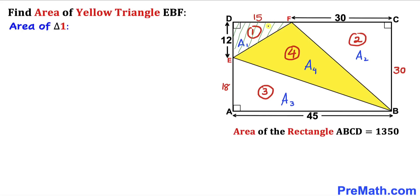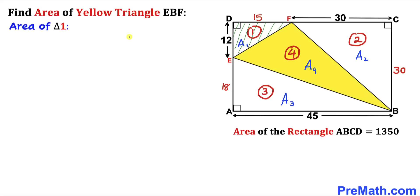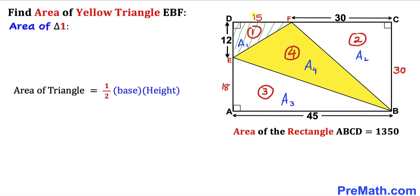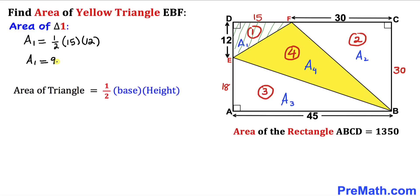Let's focus on triangle 1 and calculate its area. Recall the area of a triangle formula: Area equals one-half times base times height. For triangle 1, the base is 15 and the height is 12. So A sub 1 equals one-half times 15 times 12, which gives us 90 square units.